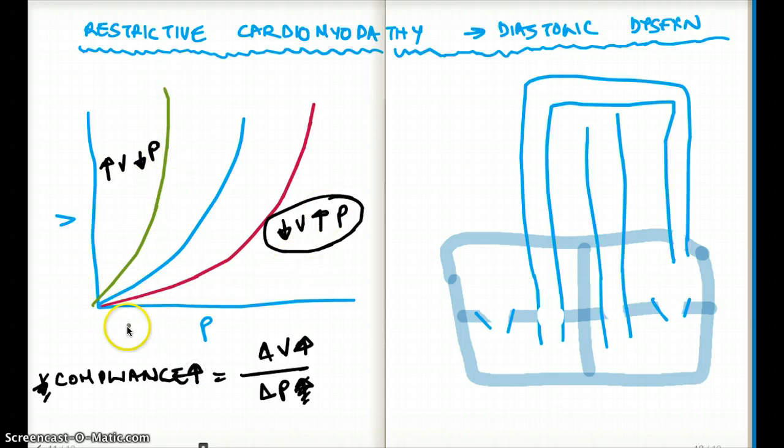So when do we have increased compliance and when do we have decreased compliance? We have decreased compliance in restrictive cardiomyopathy. Now what are some of the examples of restrictive cardiomyopathy? One example is amyloidosis.